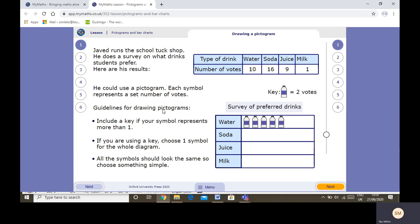One bottle equals two votes. So this is the guidelines for drawing a pictogram. Include a key for your symbol, what your symbol represents. If you don't know that a bottle represents two votes, then you're not going to be able to understand the pictogram. If you are using a key, choose one symbol for the whole diagram. Don't then turn into different symbols or lots of different symbols. Keep it simple by using one symbol.